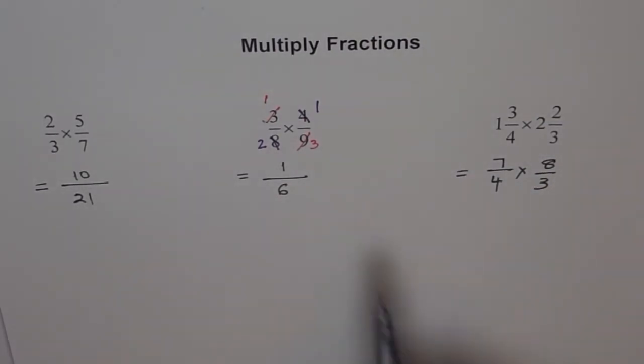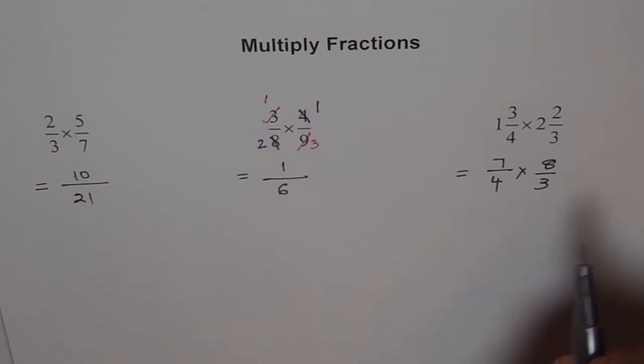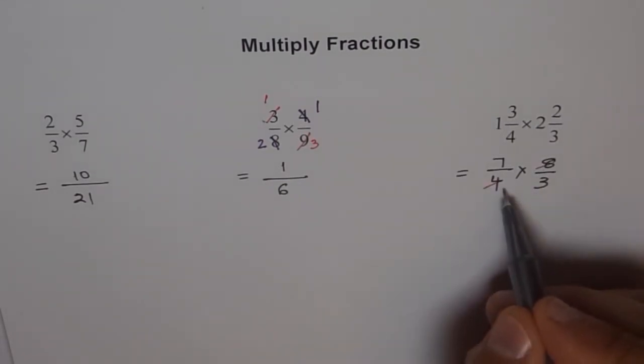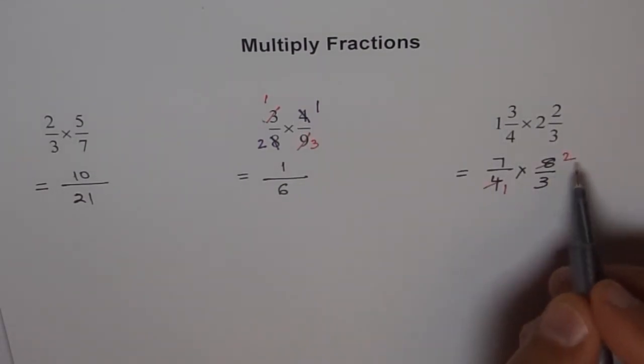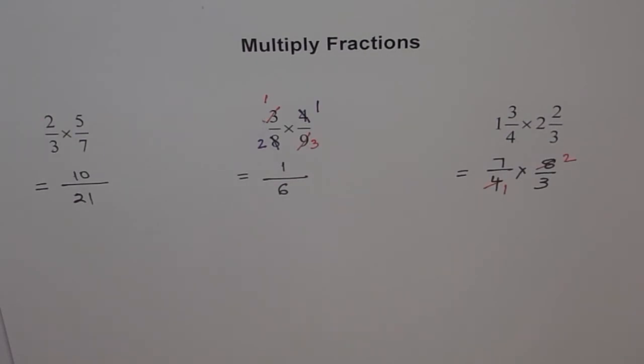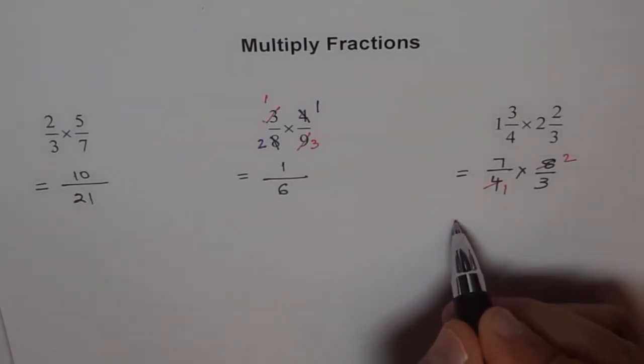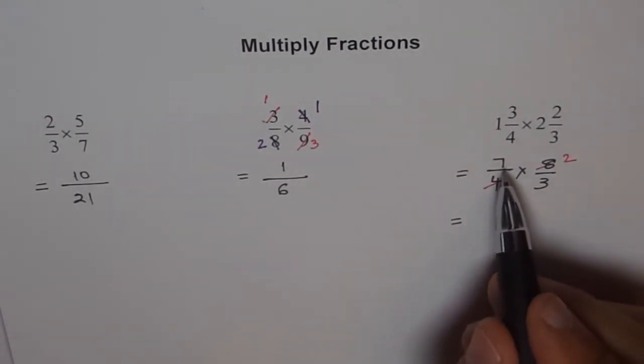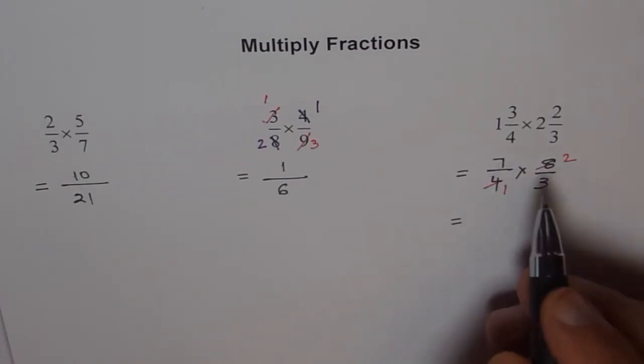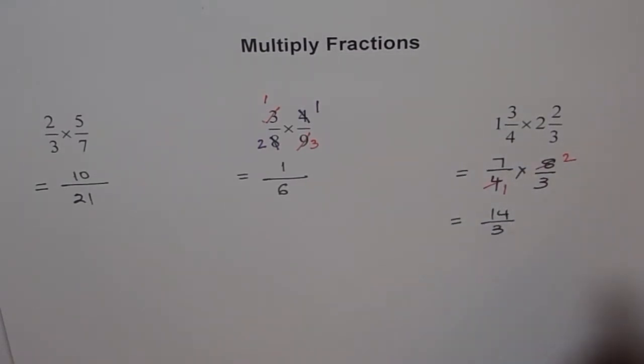So this is what we get. And next step is what we did here. Simplify. So here, 4 and 8. So 4 goes 1 times and 2 times into 8. And so we have simplified it as much as we could. Now you can multiply. 7 times 2 is 14 over 3. If you want, it depends on the question.